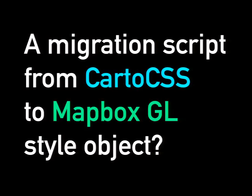We've gotten questions through our Mapbox support channels about whether we're going to create a migration script from Carto CSS to Mapbox GL style objects. The quick answer is probably no. Even from the few things I talked about today, you can see there are a lot of considerations in GL that don't even exist in Carto. If you just migrated a map it really wouldn't take advantage of a lot of the really cool aspects of GL. I personally hand-migrate everything myself, and doing that I can see how much extra work and design consideration I'm putting into them.